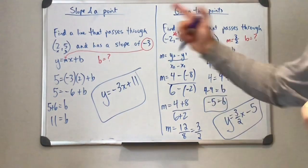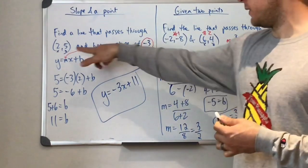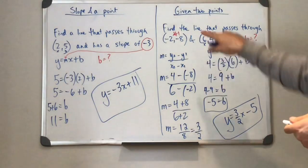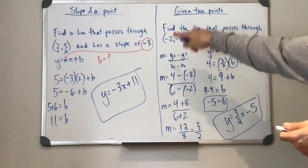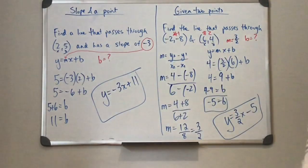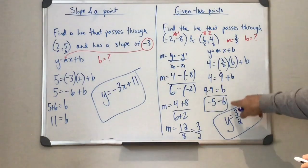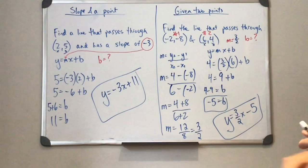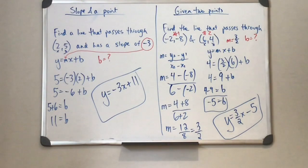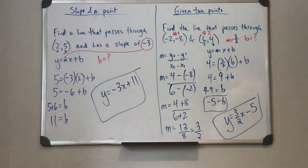Okay, so slope and a point. We sub in all the values to find the y-intercept, create an equation. Just two points. We're going to have to calculate the slope and then kind of do what we did over here. So sub in our values to calculate the y-intercept. Once you have your m and your b, you can write yourself out an equation in the y equals mx plus b form. All right, have a good one.